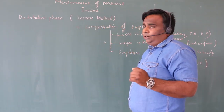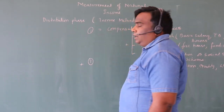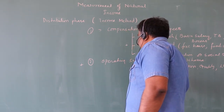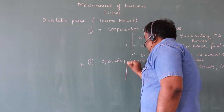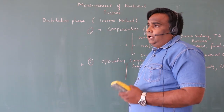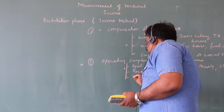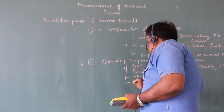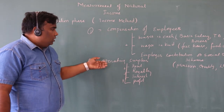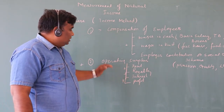The first factor income — wages (compensation of employees) — is now complete. The second is operating surplus, which includes the remaining factor incomes: rent (from land), royalty (from below land), interest (from capital), and profit. Adding rent, royalty, interest, and profit gives us the operating surplus.